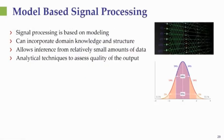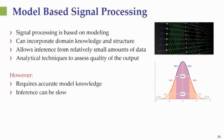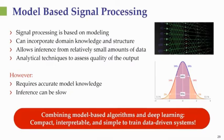In contrast to deep networks, signal processing and communication are in general based on physical models. This allows us to easily incorporate domain knowledge and structure into the methods, perform inference with small data sets, and easily assess the quality of the output. The main drawback of traditional signal processing methods is that they rely on accurate model knowledge. In addition, inference can often be quite slow and difficult to implement. Therefore, the question is whether we can combine models with deep learning to arrive at compact, interpretable, and simple-to-train data-driven systems.